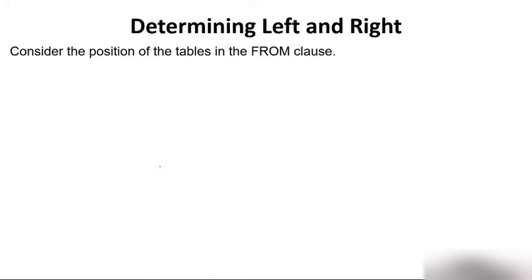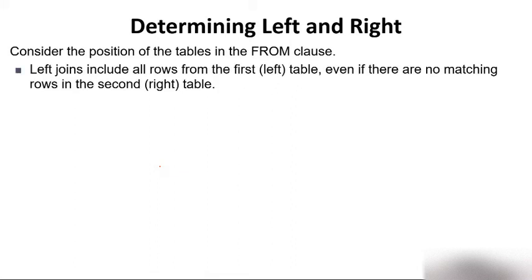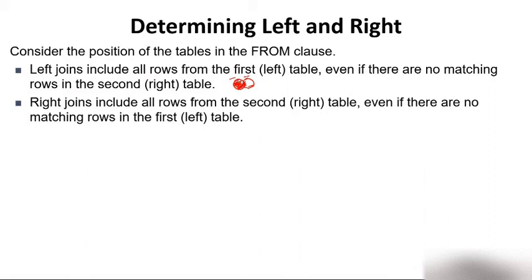Consider the position of tables in the FROM clause. Left join includes all rows from the first (left) table, even if there are no matching rows in the second table. It hardly matters whether there are matching rows in the second table — you will get all rows of the left table plus any matching rows. Similarly, right join includes all rows from the right table (second table), even if there are no matching rows in the first table.